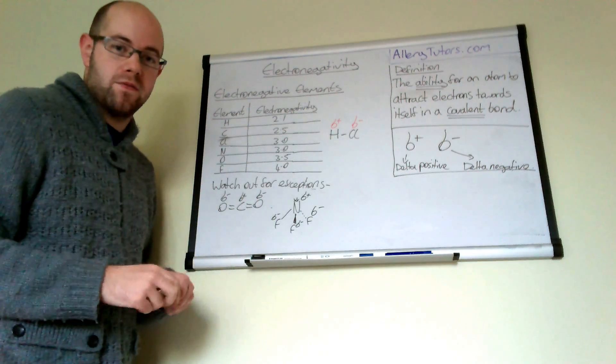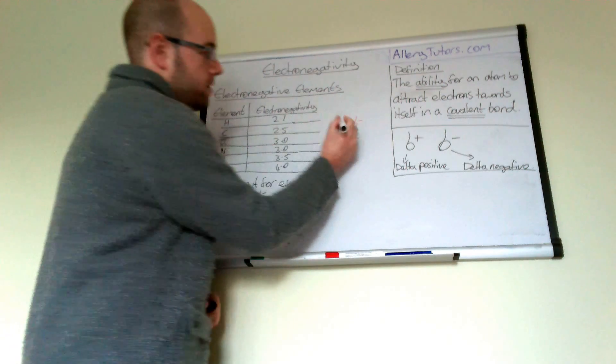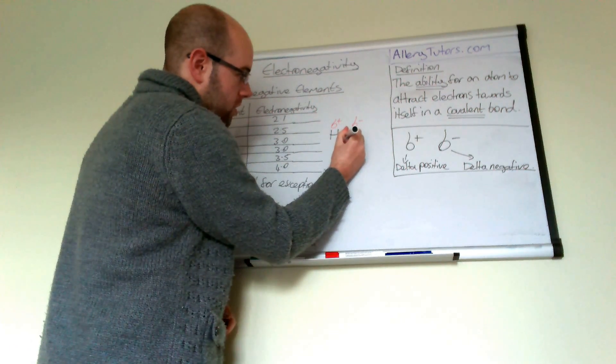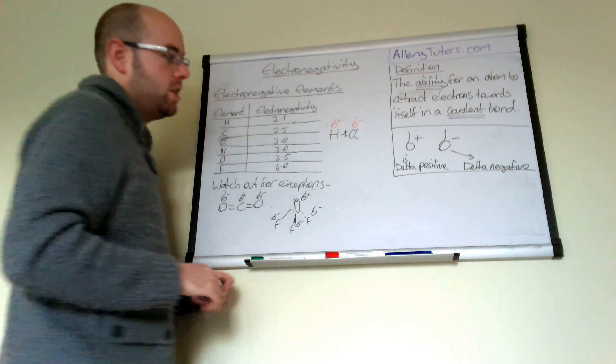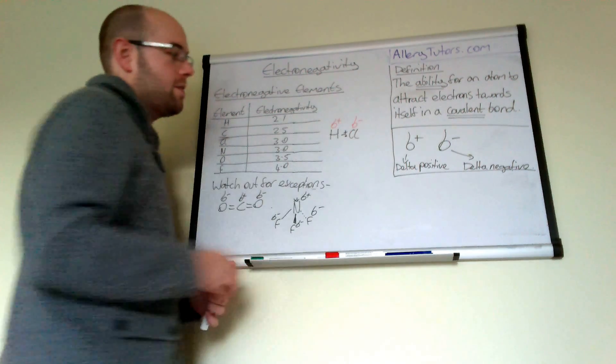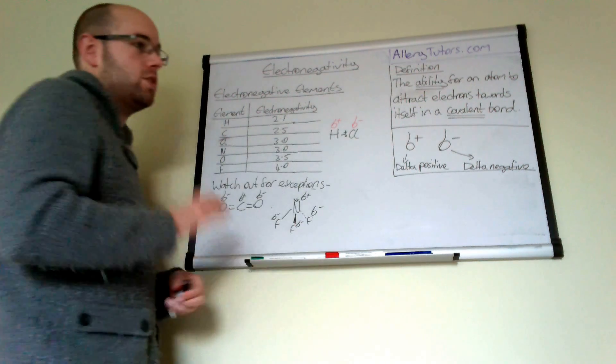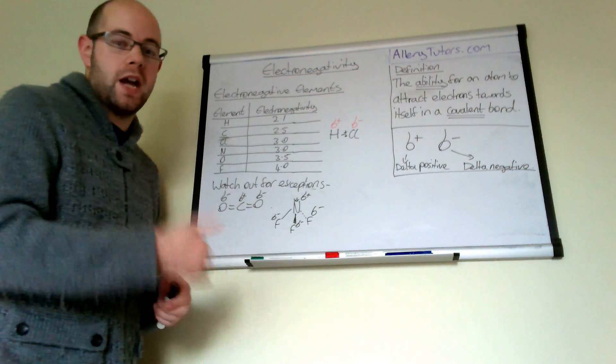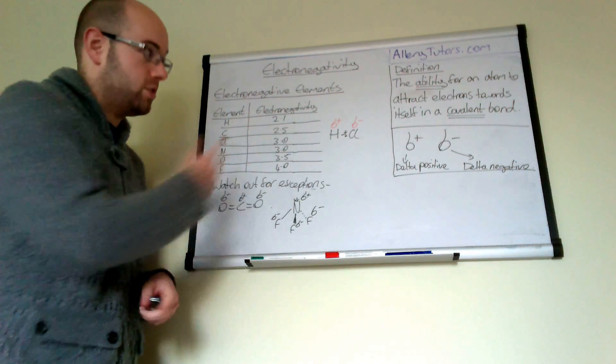What this means is the electrons in this bond that have been shared between them are actually pulled slightly towards the chlorine side rather than the hydrogen side. This polarity can give rise to further reactions, and you'll come across this so many times through AS and A2 chemistry. When you do mechanisms and other reactions, you'll see where this actually fits in.